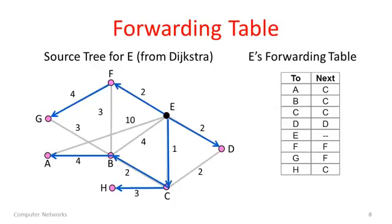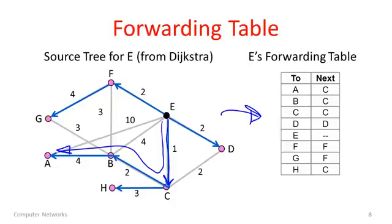Here at node E, I've shown the source tree that is the result of running Dijkstra's algorithm. Node E will gain this source tree by going through these steps, and will then know which way to go to reach all nodes. From this source tree, all of the lines have arrows showing the path to take. For instance, to get from E to A, I follow the path through E, C, B, A. I can then compile it into a forwarding table — for every destination, listing the next step. To get to A, the next step is simply to forward to C, and that's all E needs to know.